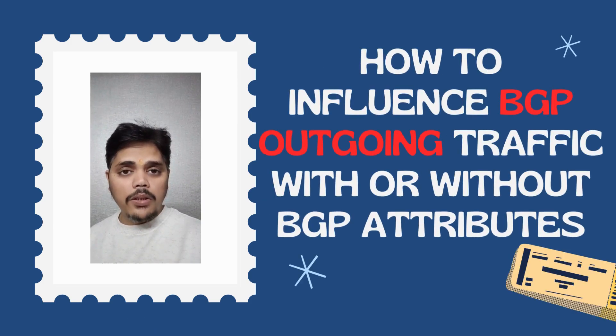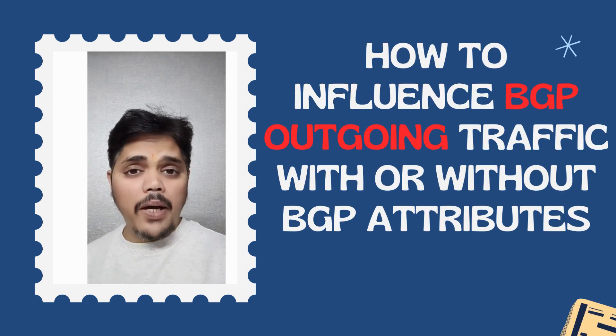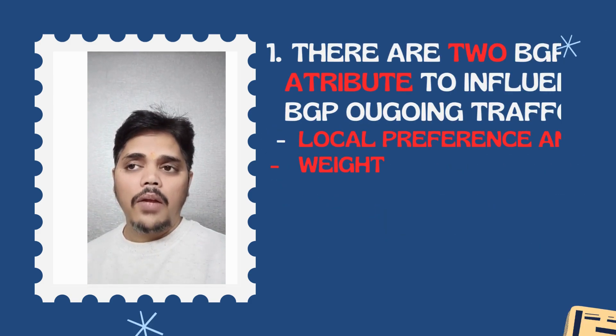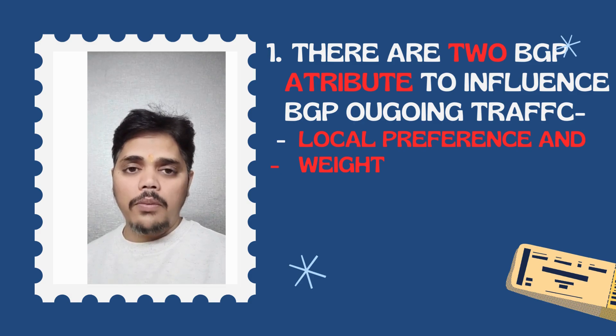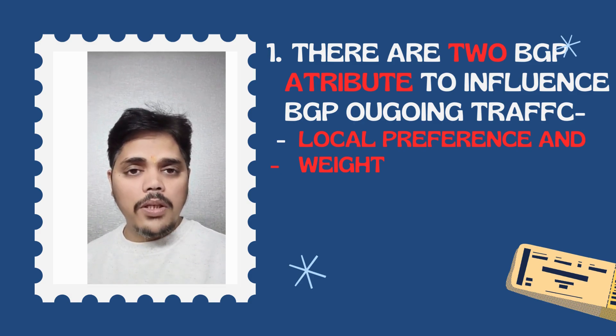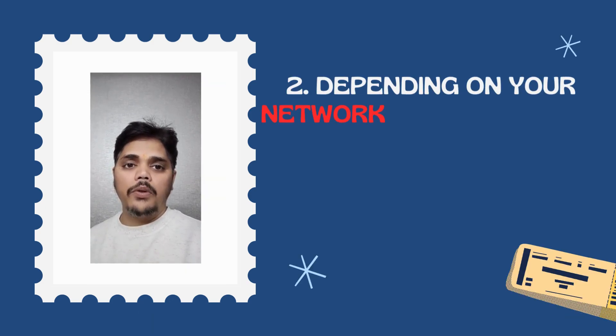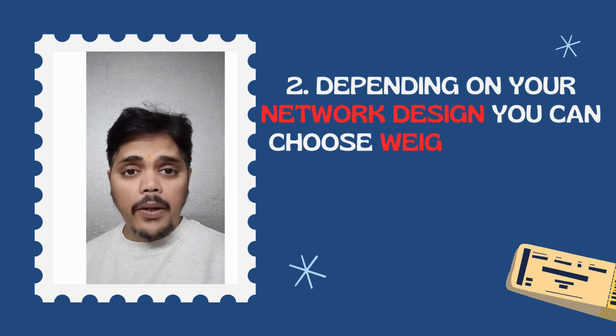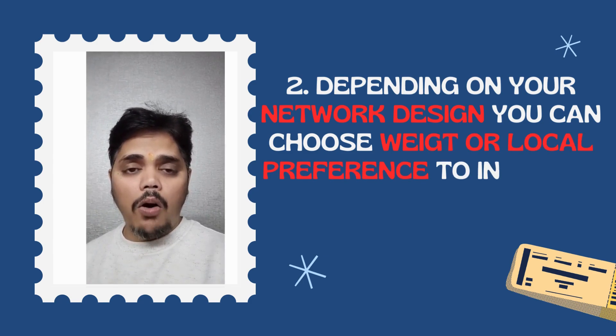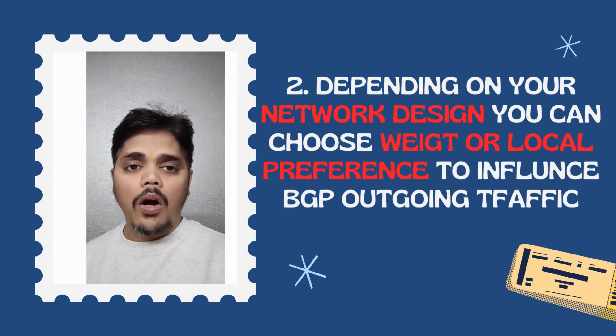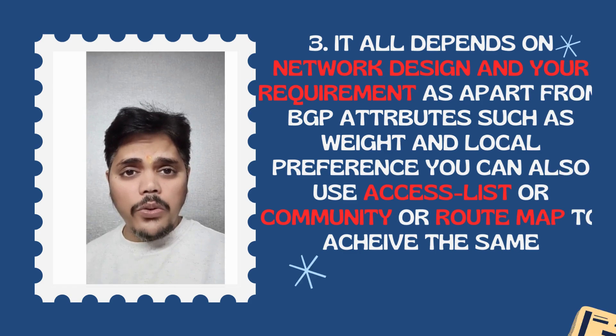One might answer: the two BGP attributes we use to influence outgoing traffic are local preference and weight — that's the number one answer. Number two would be: depending upon your network design, you can use weight or local preference for BGP outgoing traffic.